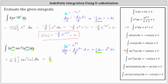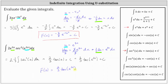Simplifying, we have 2/3 times the integral of secant squared u du, which equals tangent u plus c, giving us 2/3 times tangent u plus c, where u is e to the power of 3x. The antiderivative with respect to x is 2/3 times the tangent of e to the power of 3x plus c, which we identify as big F of x. I hope you found this helpful.